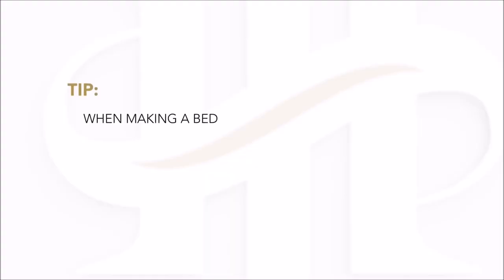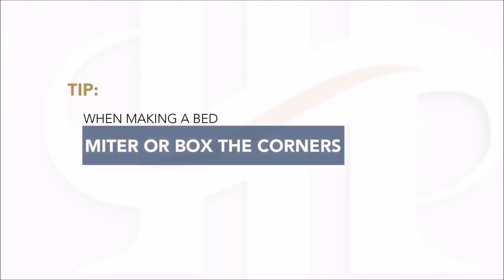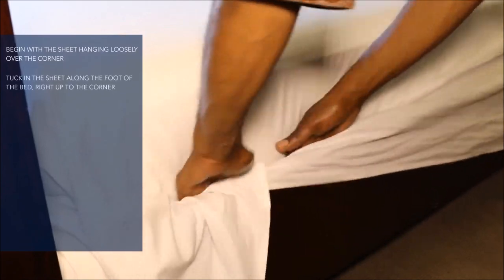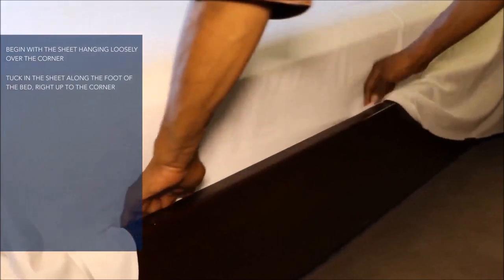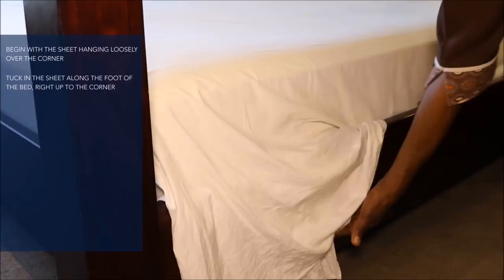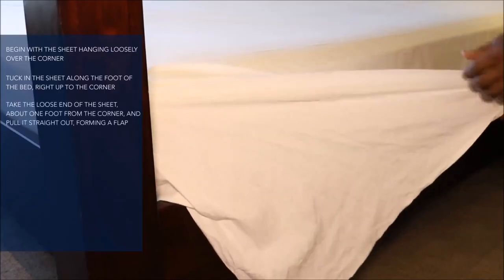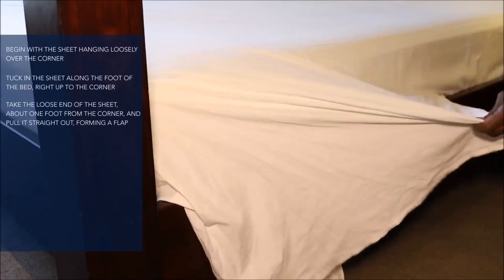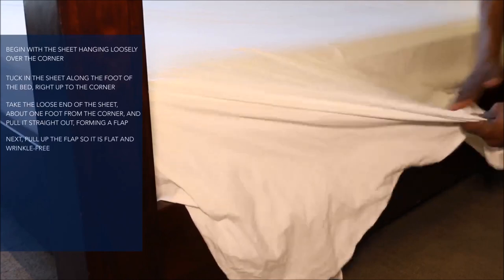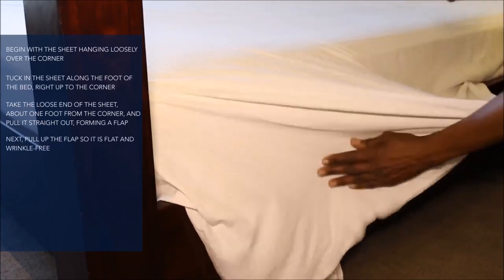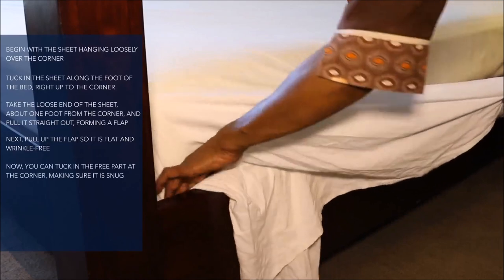The room attendant should also inspect the mattress pad and mattress for damage or stains, and report to the supervisor if necessary. When making a bed, remember to miter or box the corners. To do this, begin with the sheet hanging loosely over the corner and tuck in the sheets along the foot of the bed right up to the corner. Then take the loose end of the sheet about one foot from the corner and pull it straight out, forming a flap.